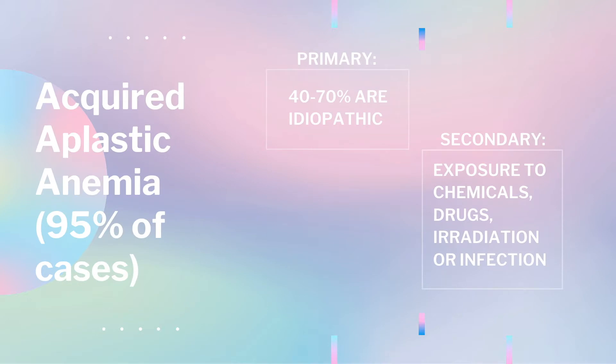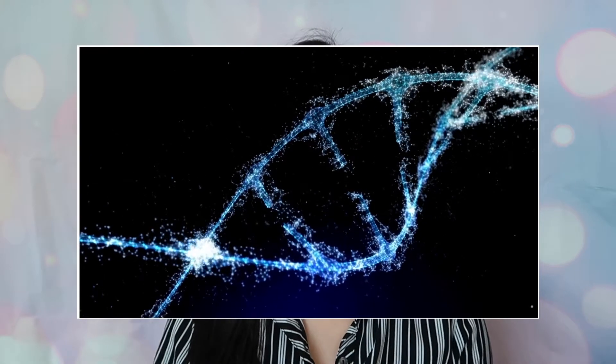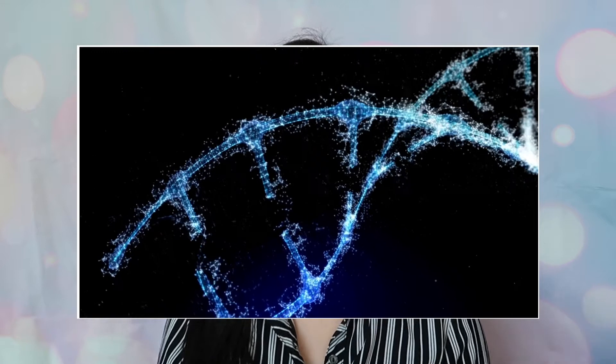Secondary acquired aplastic anemia is caused by chemical agents such as benzene, trinitrotoluene, arsenic, insecticides, and weed killers. The benzene ring is the common chemical structure within these compounds and it's very volatile, so people can inhale it and have it absorbed readily. The problem with benzene is that it acts to inhibit DNA and RNA synthesis, stopping replication and differentiation, resulting in an empty marrow.